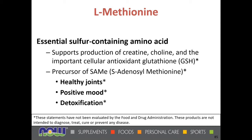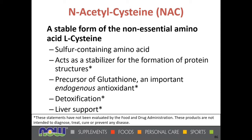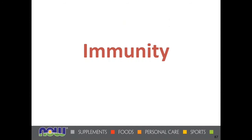Cysteine is also a free radical fighter, detoxifier, and precursor of N-acetylcysteine (NAC) and glutathione. L-methionine is an essential sulfur-containing amino acid involved in the production of creatine, choline, and indirectly glutathione. It is a precursor for SAMe, which is involved in healthy joints, positive mood, and detoxification. N-acetylcysteine (NAC) is a stable form of the non-essential amino acid L-cysteine, which explains why it is generally more popular than L-cysteine itself. It is a sulfur-containing amino acid involved in protein structure formation, is a precursor to glutathione, and is involved in detoxification and liver support.